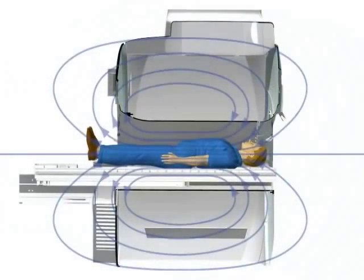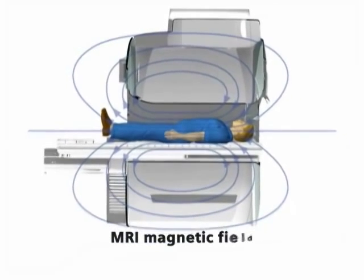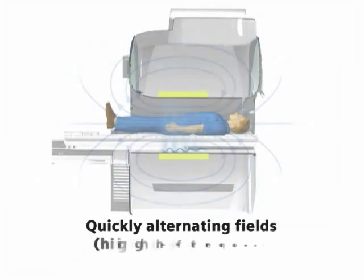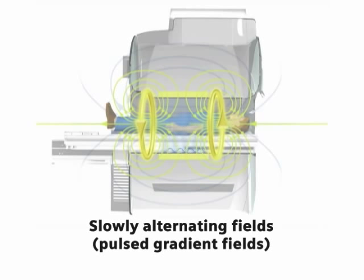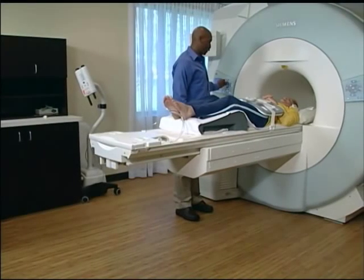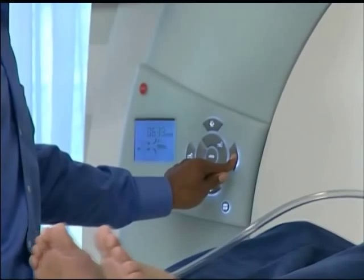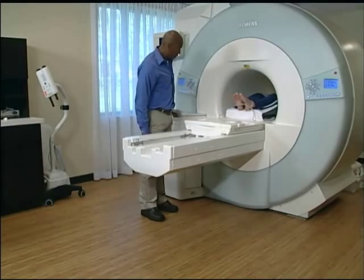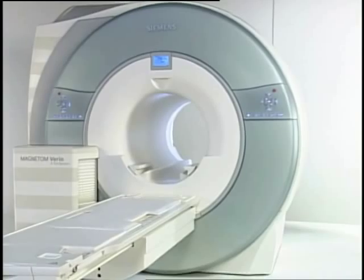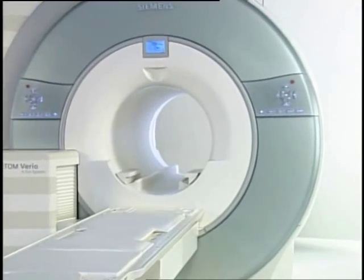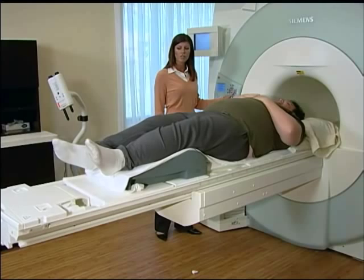Therefore, the patient is exposed to three different magnetic fields during the MR examination: the static main magnetic field that aligns the protons, the high frequency alternating fields that disrupt the alignment, and the pulse gradient field that enables correlation of the MR signals to the location of origin. All three fields affect the patient differently. The static magnetic field used in MR does not cause any lasting side effects. The same is true for alternating fields when used properly. The rapidly switched magnetic field gradients in combination with the static main magnetic field are the cause of the considerable noise created during an MR examination.